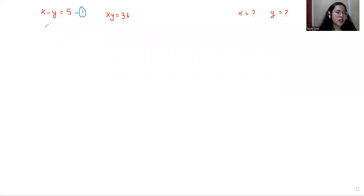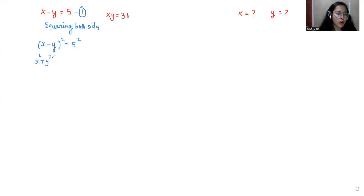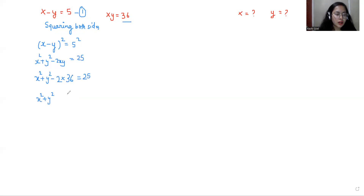Taking this as equation number 1 and squaring both sides, x minus y whole square equals 5 squared. This gives x squared plus y squared minus 2xy equals 25. Substituting xy equals 36, we get x squared plus y squared minus 2 times 36 equals 25. So x squared plus y squared equals 25 plus 72, which is 97.